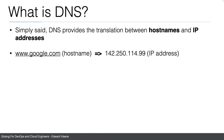For example, if you type www.google.com in your browser, which is a host name, a DNS server will translate that to an IP address. When I tested it on my machine, it was 142.250.114.99, but if you test it on your machine, it could be a different IP address. You can use tools like NSLookup on Windows, or Host or DIG on Mac OS or Linux to do the translation of a host name to an IP address.